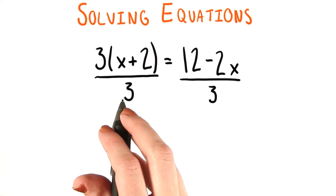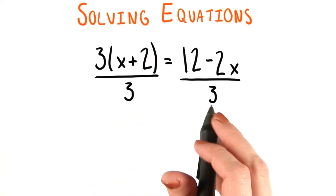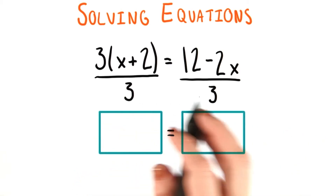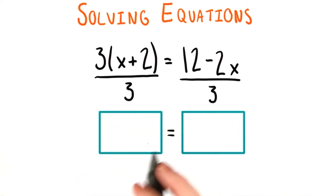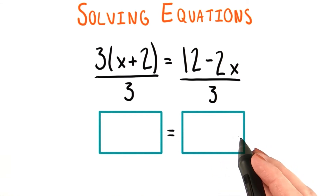I want us to start out by dividing each side by 3. If you do this first step, then what do you end up with on either side of the equation?